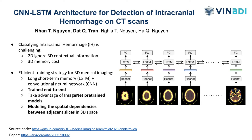A nice approach to this problem is to ignore the 3D contextual information and treat every image independently. An alternative approach is to utilize 3D convolutions to learn directly from voxels, but this method requires a large amount of memory.